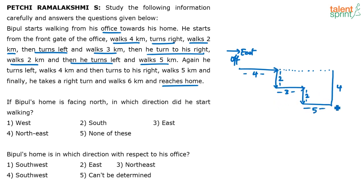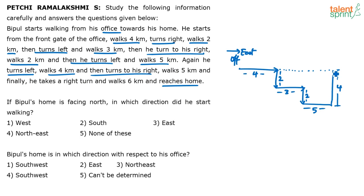Again he turns left — now the person was going east so left means north — and walks 4 kilometers. When taking these 4 kilometers, you have to map it to the other point. This is horizontal, this is vertical — 2 and 2 already covered 4 kilometers vertically, so when you cover 4 kilometers in the opposite direction you match the same line. Be careful about this — it is the most important part here.